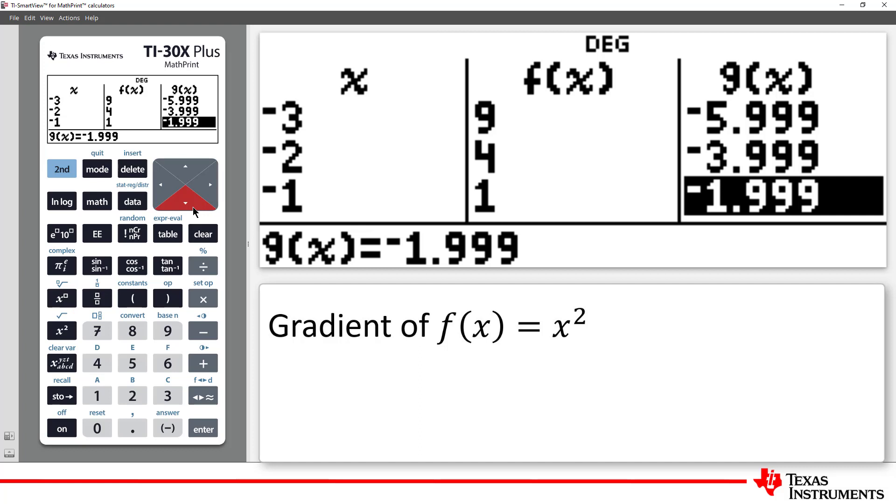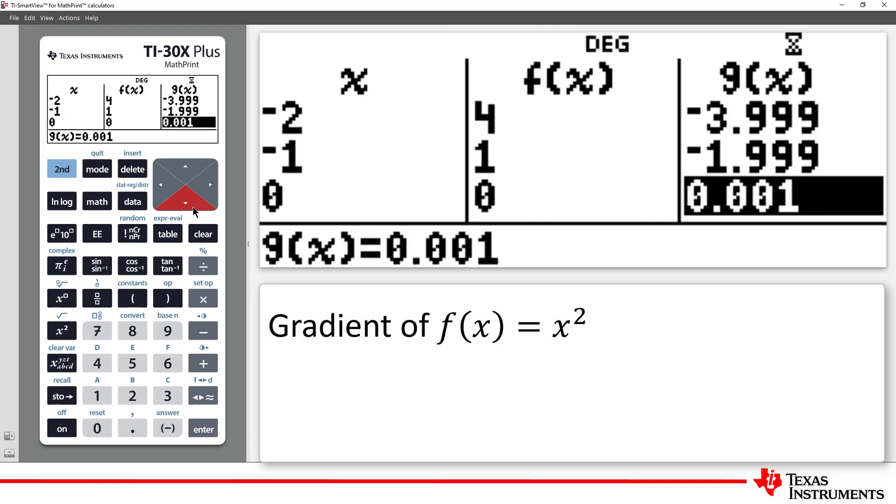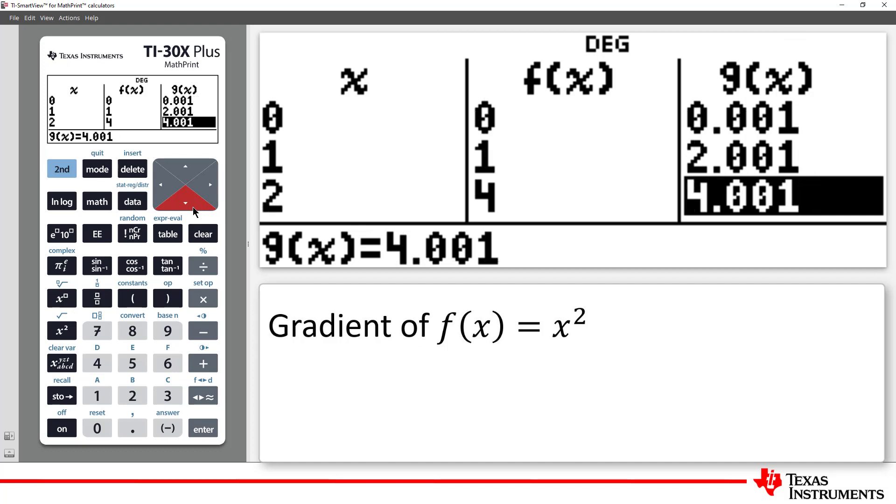Or in general, the gradient of the function f of x equals x squared appears to be simply double the x coordinate. In other words, the gradient of the function is equal to 2x.